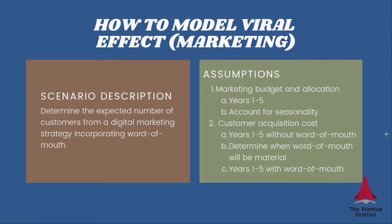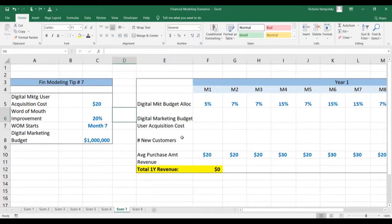In terms of when the word of mouth effect can start, it can be discretionary — it can be six months, one year, or whenever you think is reasonable. There is no rule for that either. So let's see how we're going to get this done.